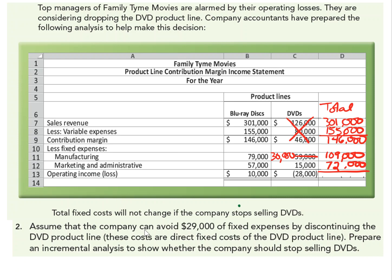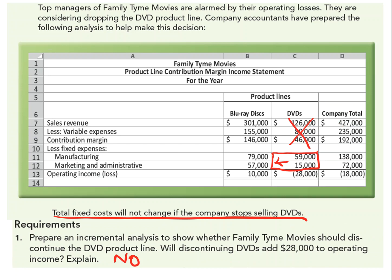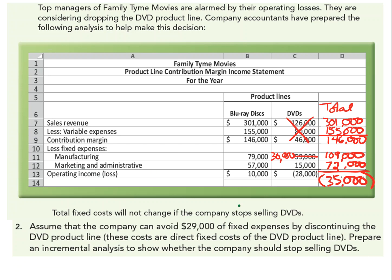And it looks like we will still be in the hole $35,000. Now that's worse than what it was before. If we kept producing the DVD line, we're only losing $18,000. In this case, if we quit producing the DVD line and cannot get rid of all the fixed costs, our losses grow to $35,000. So that is certainly not a good strategy.